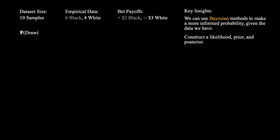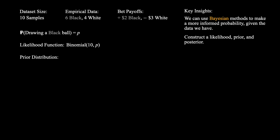Let's start by defining the probability of drawing a black ball as a variable p. We know that each draw from the urn behaves like a Bernoulli random variable with probability p of being black. Since our empirical data is effectively the number of black draws in 10 samples, our likelihood function is a binomial with n equals 10 and probability p. Moving on, we can set the prior distribution as a beta distribution with parameters 1, 1. This is a standard conjugate prior for the binomial distribution.